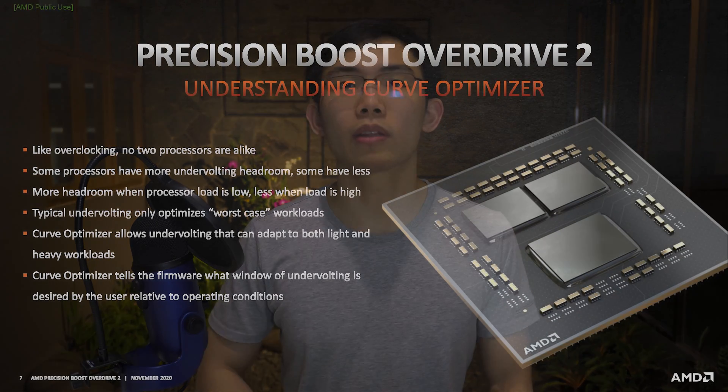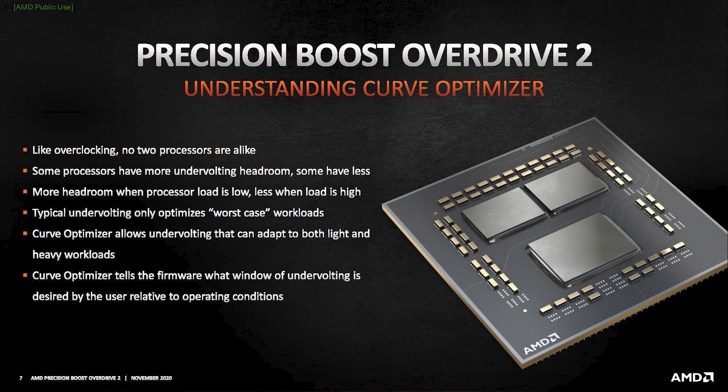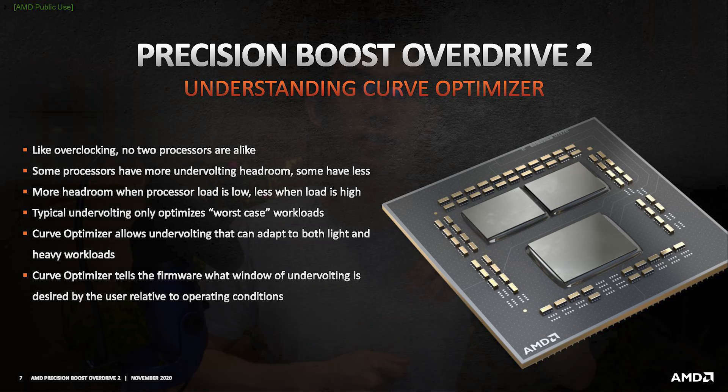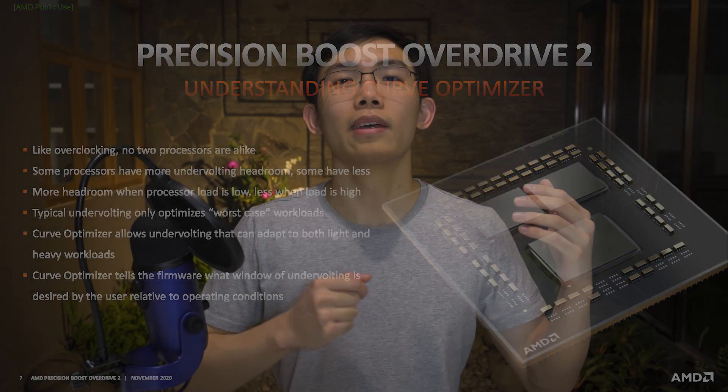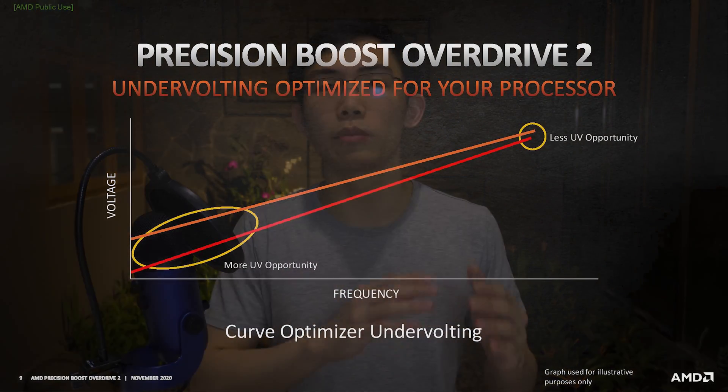So what is Curve Optimizer? A lot of people have the misconception that Curve Optimizer is an undervolting tool — because AMD calls it that — and that reducing voltage using offsets makes your CPU cooler. But that's actually a mistake.